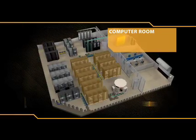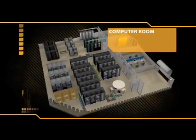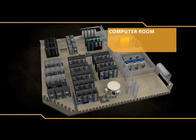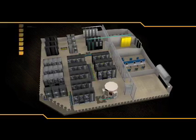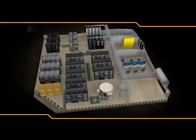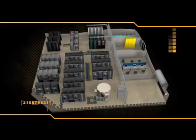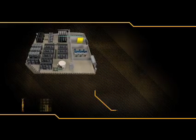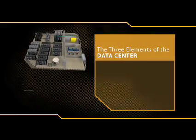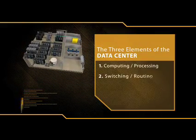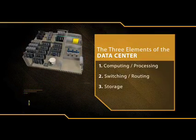The primary operations of the data center occur within the computer room, which houses all of the interconnected computing resources critical to business functions. The functions performed within the computer room involve interconnecting equipment that provide three fundamental data center operations: computing, switching and storage.